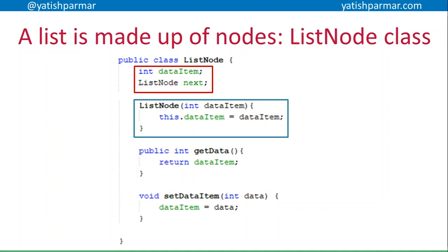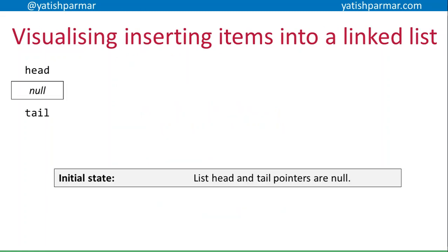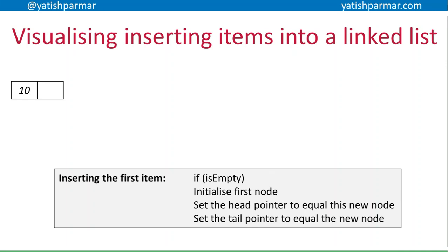That's my ListNode class — quite straightforward. Now, visualizing inserting items into a linked list: at the beginning, remember the head and tail pointers are null. When I want to add data for the first time, I need to check if my list is empty. If it is, I initialize a new node, set the head pointer to the new node, and the tail pointer to that new node as well. Now I've got head and tail pointing at my new node — they're no longer null. Also remember: how do I know I'm at the end of the list? The pointer on that node needs to be null because there is no further node for it to point to.